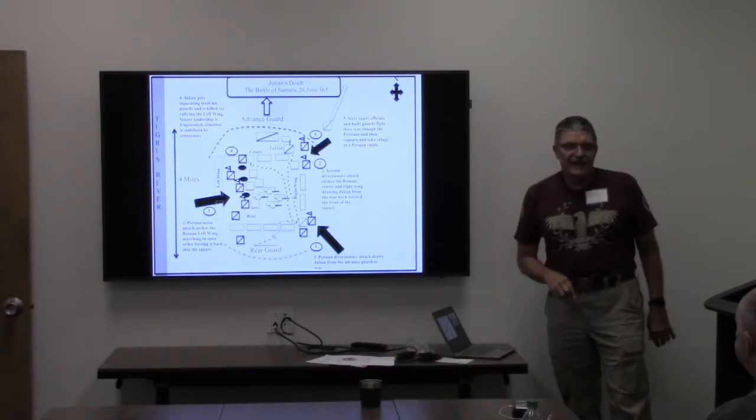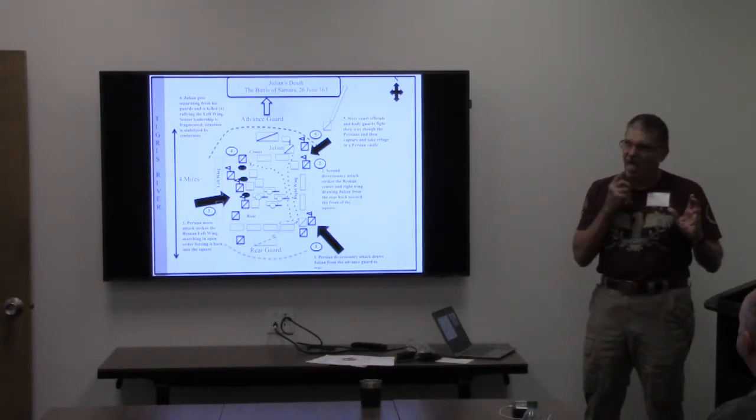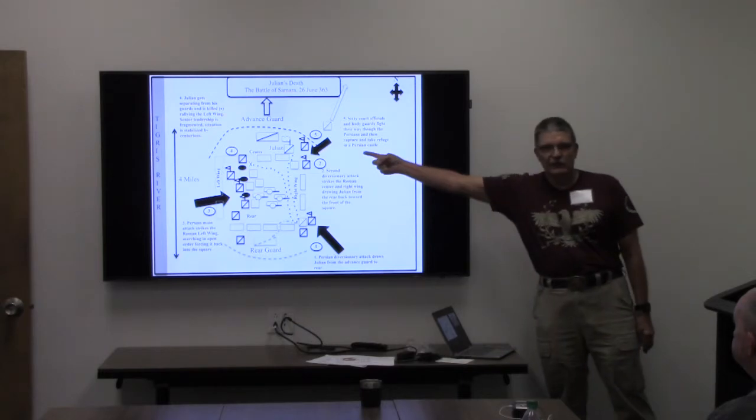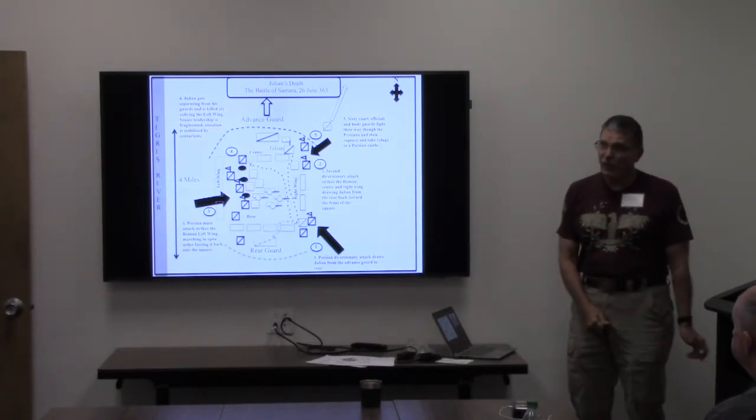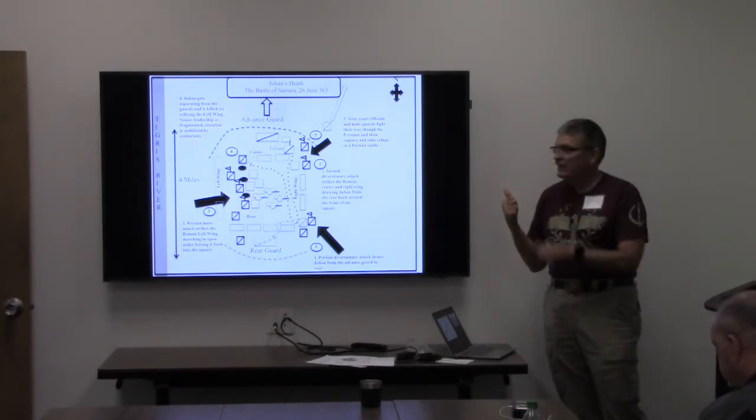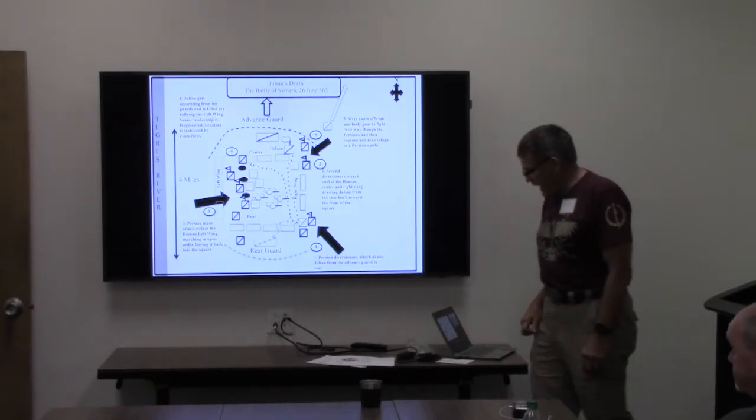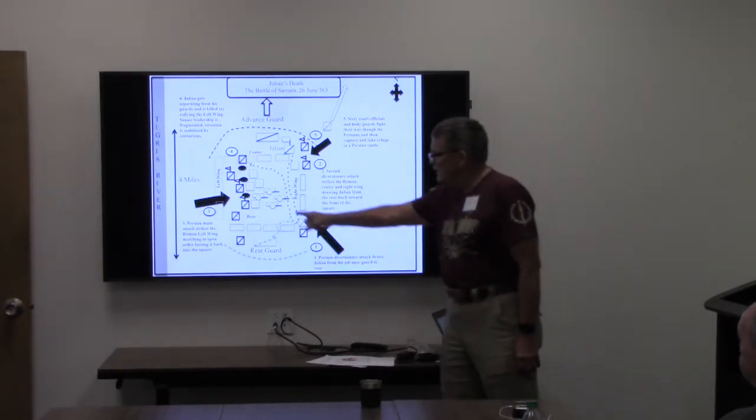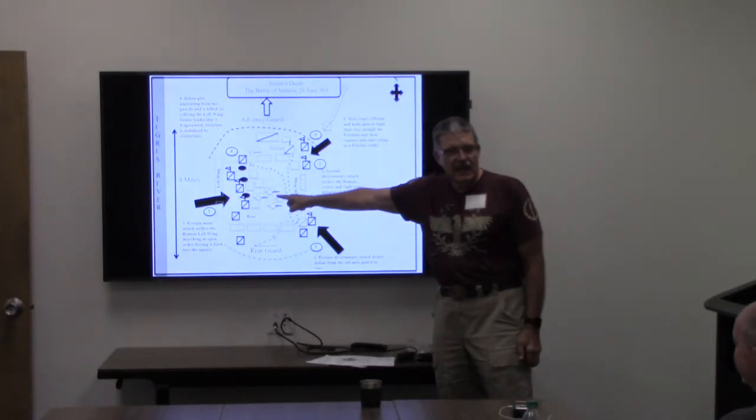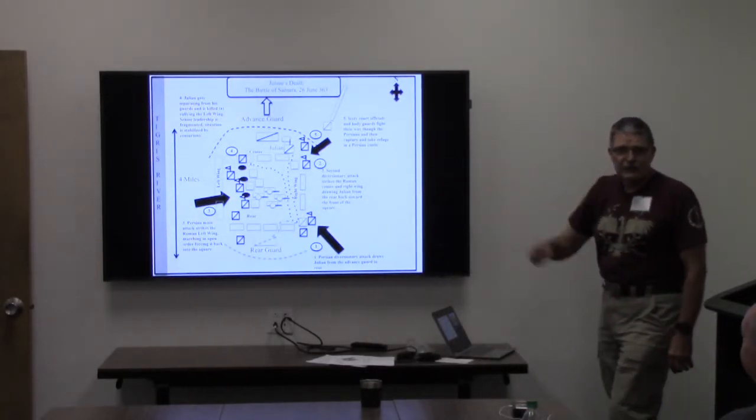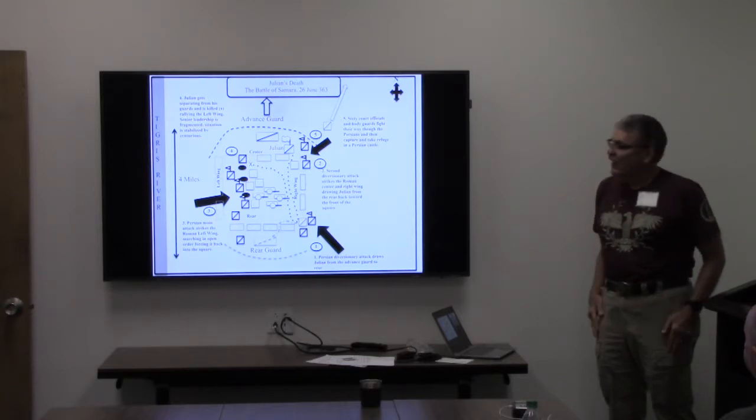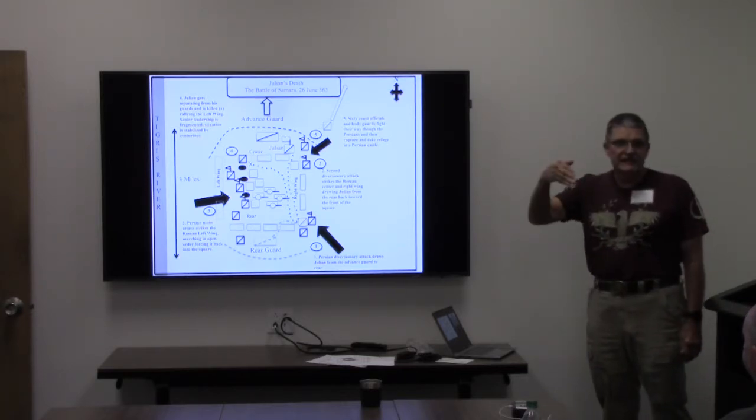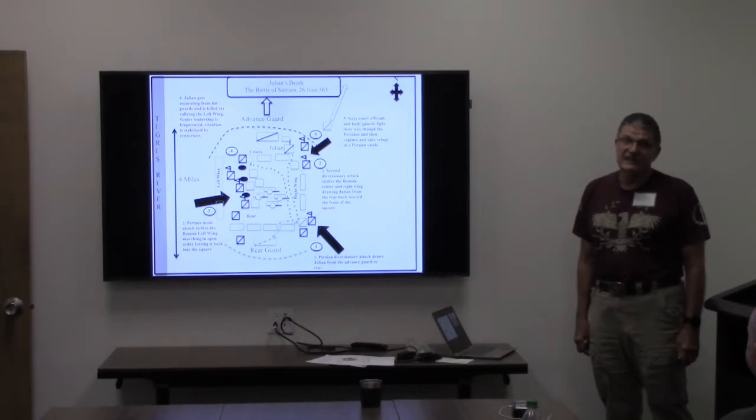He comes back, stabilizes it, and guess what happens next? The Persians hit him in the front, so he rides back up. And then the real attack actually hits. These are all diversions. An elephant cavalry attack hammers the riverside part and it collapses. So Julian then rides in and tries to rally that. That's where he gets killed.